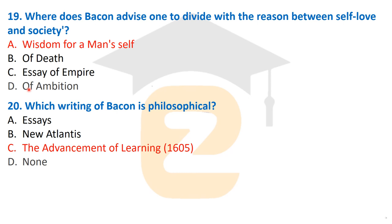The last question: Which writing of Bacon is a philosophical work? That was The Advancement of Learning, published in 1605. This was the philosophical work by Francis Bacon. We have discussed the important MCQs related to the works, life, and scientific methods of Francis Bacon. Please stay connected with English Zone for more informative content on English literature. Thank you very much for watching.